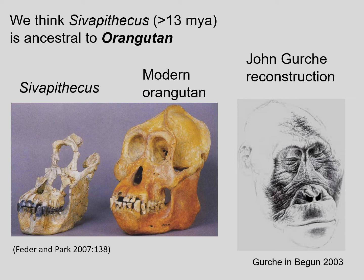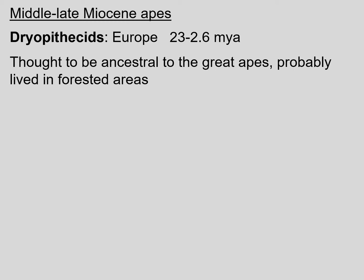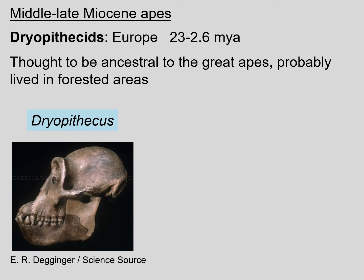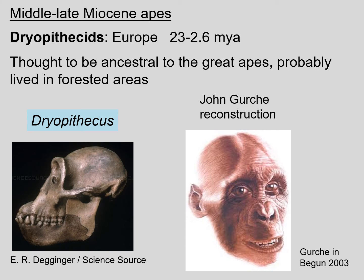If you compare the skull of the modern orangutan on the right to the Sivapithecus fossil on the left, you can see the similarities. And again, a wonderful John Gurche reconstruction. The Dryopithecids, which we think are in our lineage, date between 23 to 2.6 million years ago. We think they're ancestral to the great apes and to the human lineage, and they probably lived in forested areas. Dryopithecus is of course a very famous genus within the Dryopithecid group, and John Gurche has reconstructed its face.